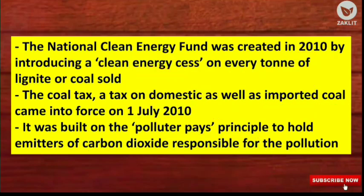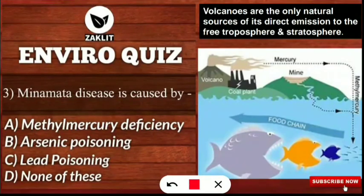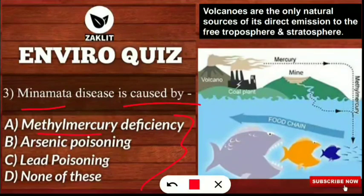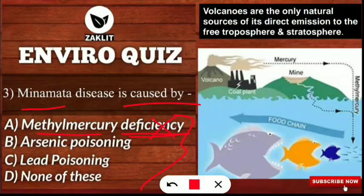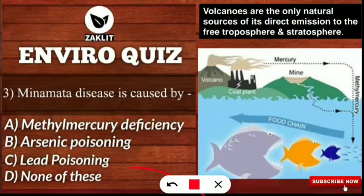The third question is very interesting. The question is: Minamata disease is caused by what? Some of you may pick the option saying 'methyl mercury deficiency,' but that is wrong. It is caused by methyl mercury intake. So none of the deficiency options are correct. This is also an example of biomagnification.